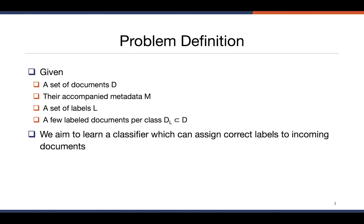Formally, our problem can be defined as follows. Given a set of documents, their accompanied metadata, a set of labels, and a few labeled documents per category, we aim to learn a classifier which can assign correct labels to incoming documents.